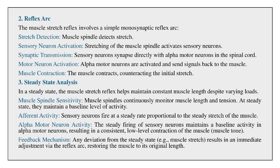Steady-state analysis: In a steady state, the muscle stretch reflex helps maintain constant muscle length despite varying loads. Muscle spindles continuously monitor muscle length and tension; at steady state, they maintain a baseline level of activity. Sensory neurons fire at a steady rate proportional to the steady stretch of the muscle, maintaining baseline activity in alpha motor neurons, resulting in consistent low-level muscle contraction — muscle tone.